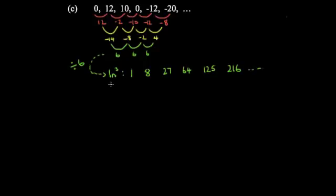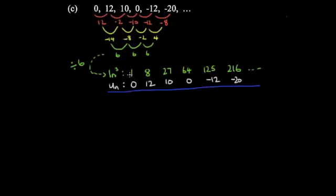The white line (our original sequence) was 0, 12, 10, 0, −12, −20. To go from 1 to 0 you subtract 1; to go from 8 to 12 you add 4; to go from 27 to 10 you subtract 17; and to go from 64 to 0 you subtract 64.